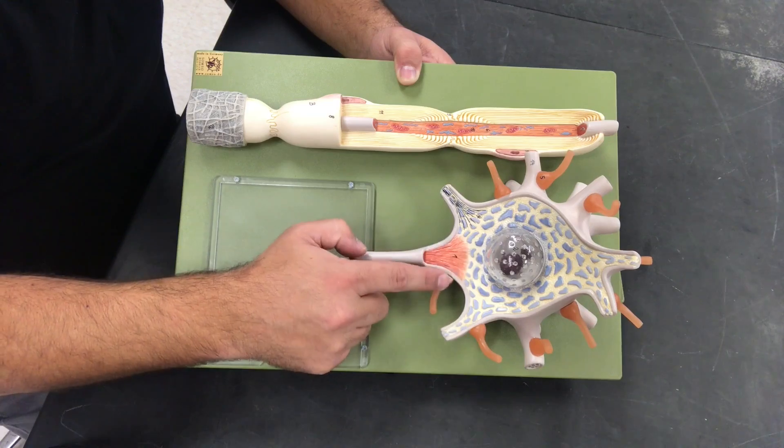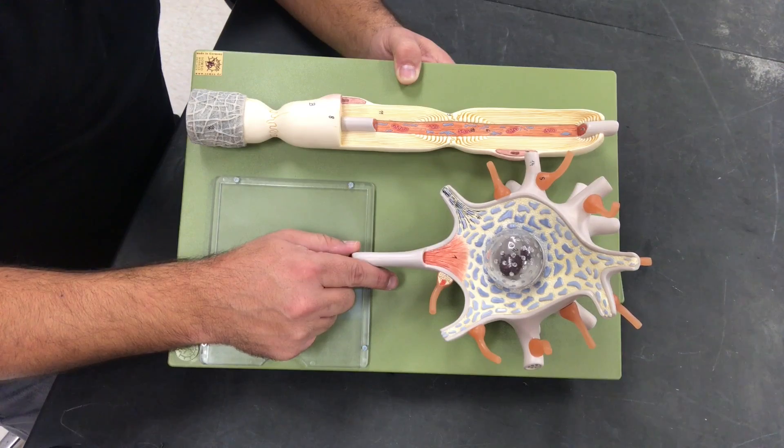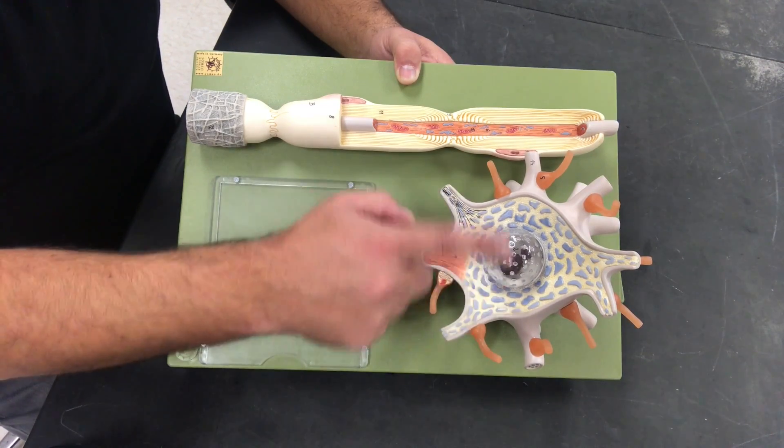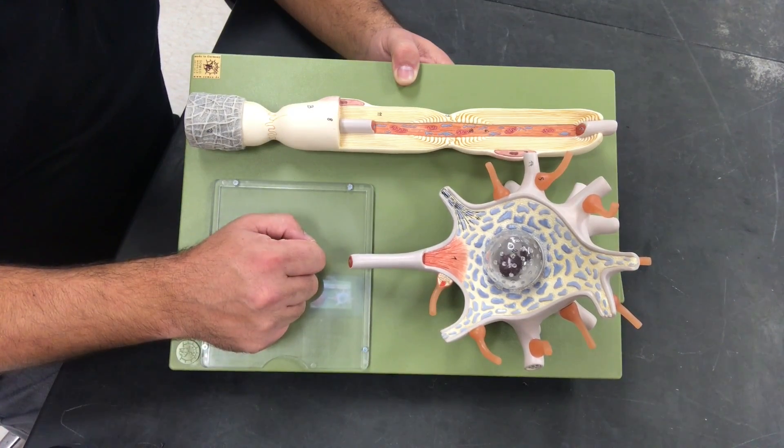And we can put this synaptic end bulb right here on the axon hillock and that would give us the most ideal condition for our graded potentials to generate an action potential. And this would give us an axo-axonic connection.